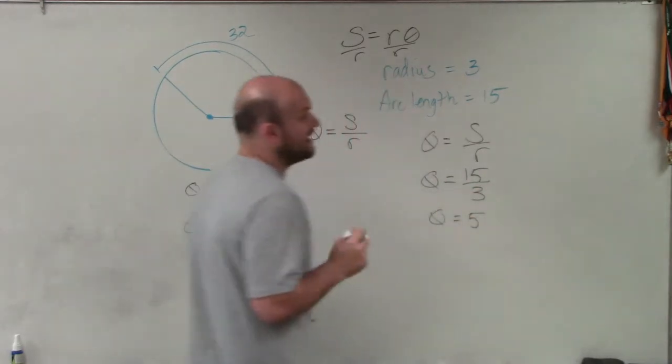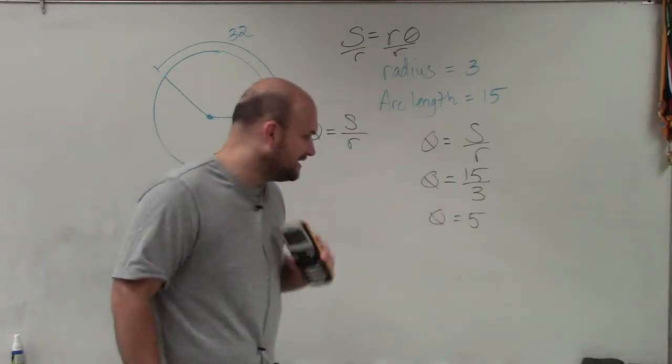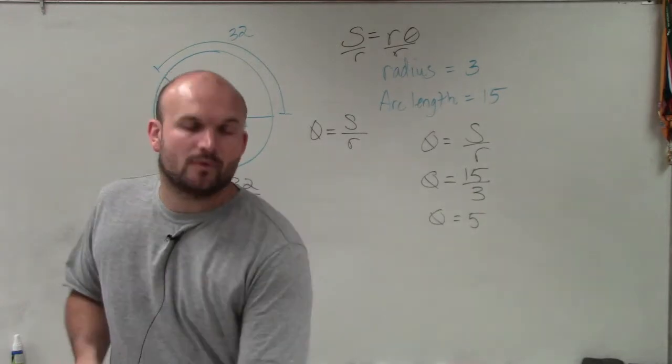These divided evenly, which is going to be 5. So again, that represents five radians. If I want to determine what the degrees would be, then I would have to go ahead and convert it over to degrees using our ratio.